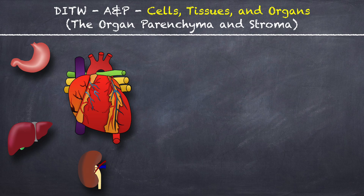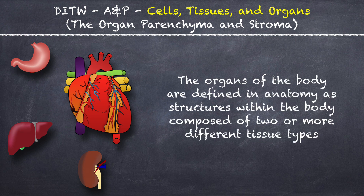This is DITW Anatomy and Physiology and you are watching the video on organ parenchyma and stroma. The organs of the body are defined in anatomy as structures within the body composed of two or more different tissue types.